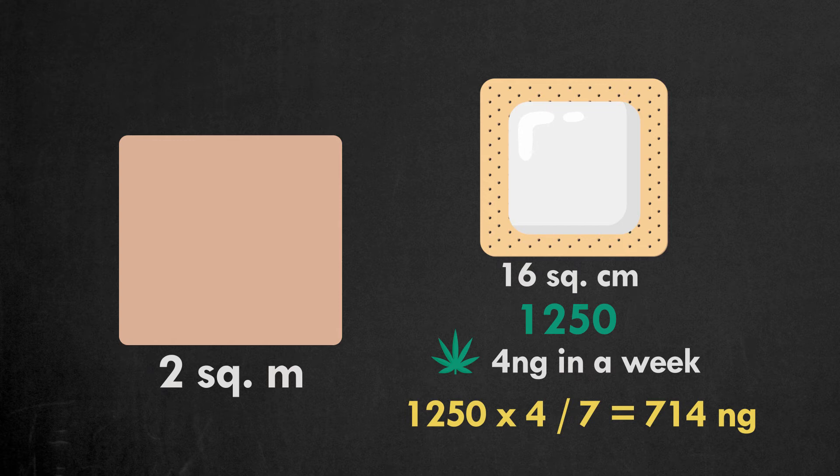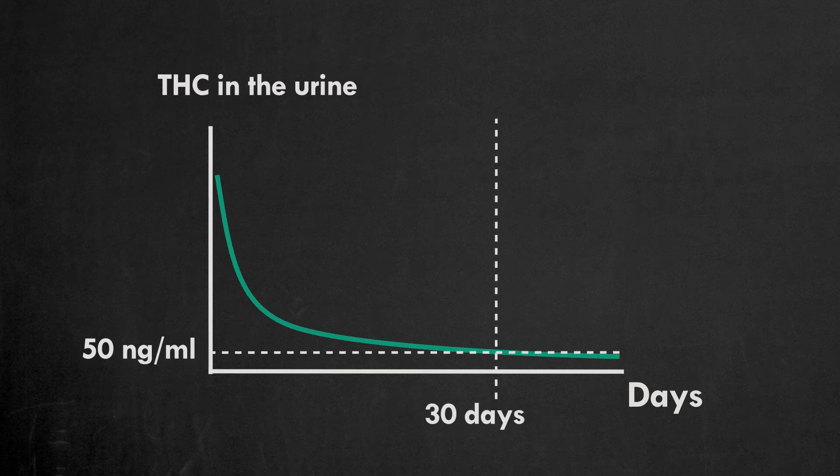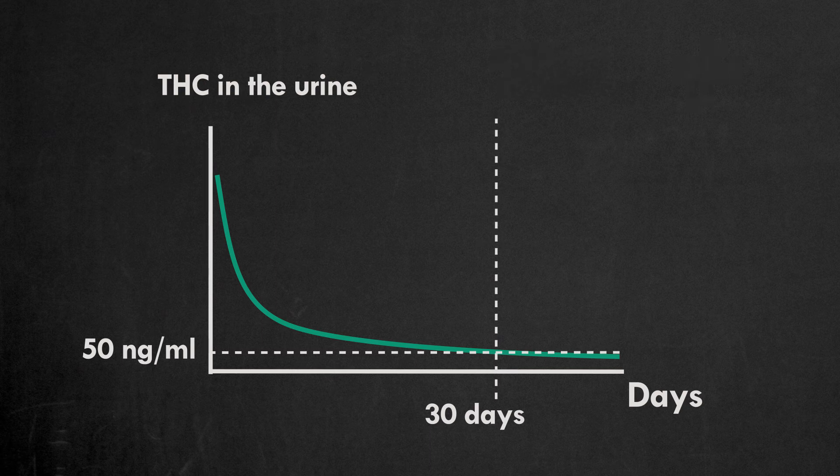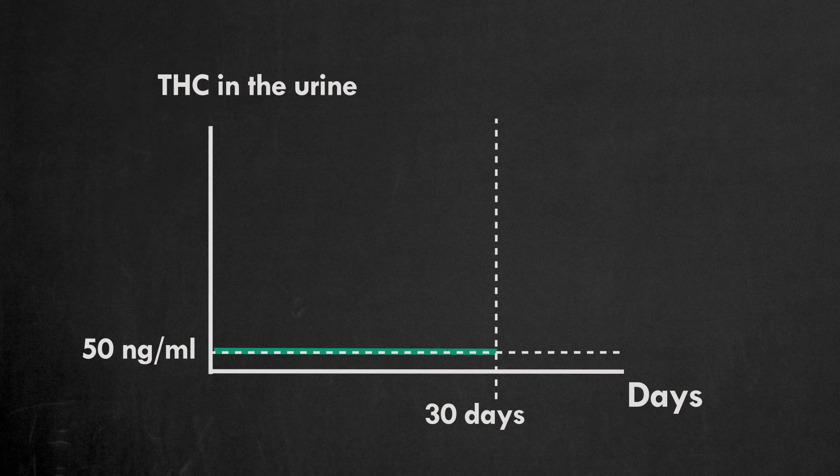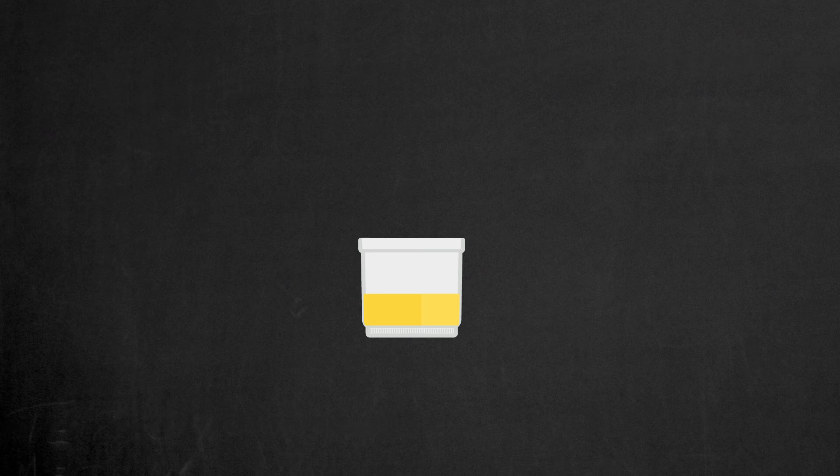Let's compare that with the THC excretion in the urine. THC is detected in the urine for up to 30 days with a cutoff level of 50 nanograms per milliliter for regular users. Let's use the minimal values and assume the average THC concentration in the urine for 14 days will be 50 nanograms per milliliter. The average daily urine output is 1,400 milliliters. The average excretion of THC in the urine will be 70,000 nanograms per day.